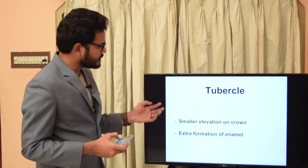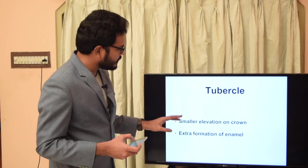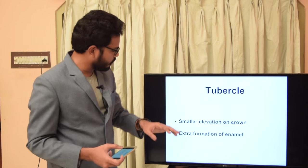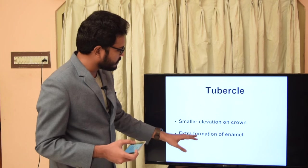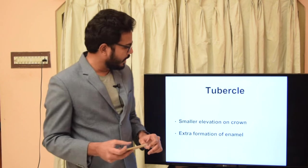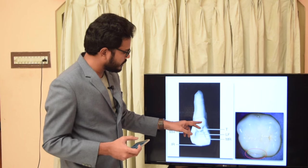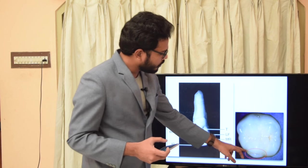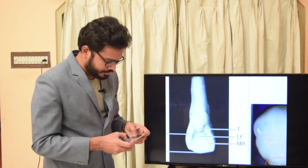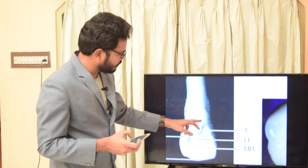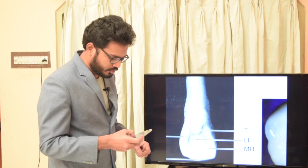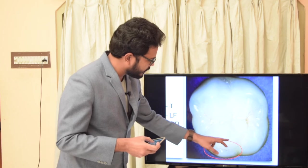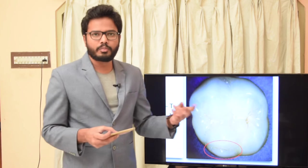The next term is tubercle. A tubercle is a smaller version of a cusp — a smaller elevation present on any part of the crown, formed because of extra deposition of enamel. You can see a tubercle on the lingual aspect of an incisor and on the palatal aspect of a molar. The cusp of Carabelli is also a form of tubercle.